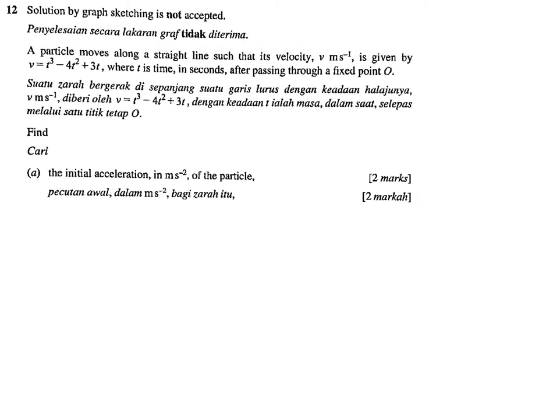This is an SPN question from year 2019. A particle moves along a straight line such that its velocity is given by v = t³ - 4t² + 3t. Firstly, it's a cubic equation because of t to the power of 3. Secondly, the graph does not have any v-intercept, meaning the initial velocity is 0, so when drawing the graph you start from zero after passing through fixed point O.